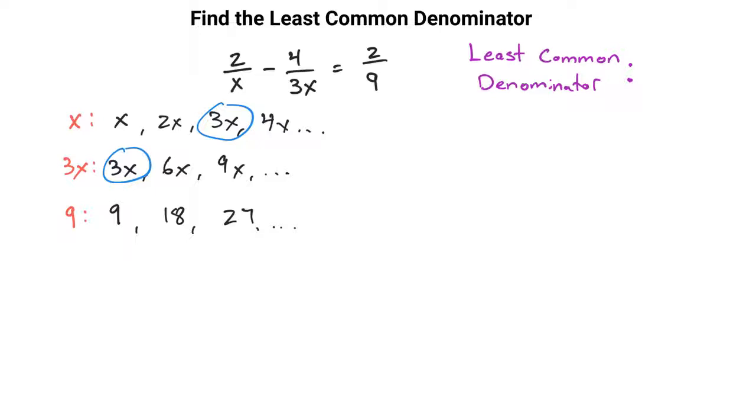And what do you notice? Well, there's no way that any of these are going to work because you still need to have an x in it. And so you're going to also multiply each of these by an x as well, so 9x, 18x, 27x.